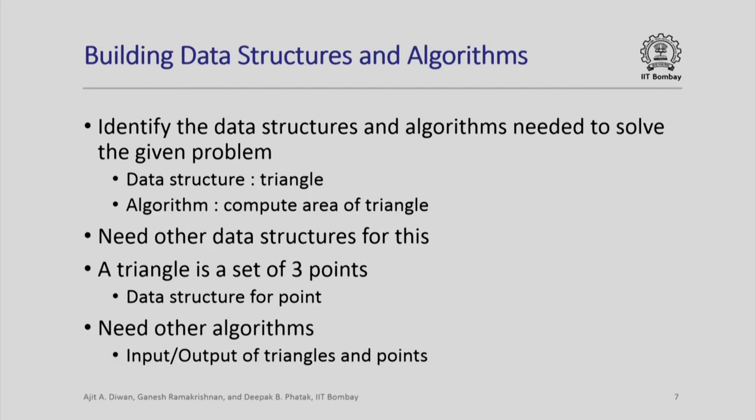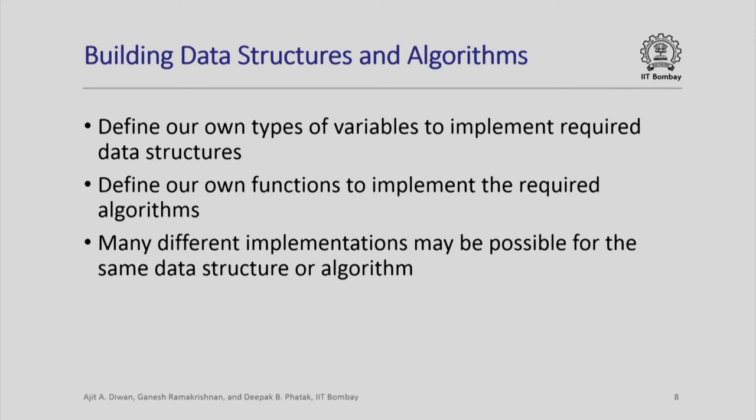In general, in a programming problem you need to identify the data structures and algorithms that are needed to solve the given problem. In this case the data structure needed was a triangle and the algorithm needed was how to compute the area of a triangle. But for this you may need other data structures — there is no direct way of representing a triangle, so a triangle is a set of points and you again need a data structure for points. You may need other algorithms for input/output and so on — for reading in and writing triangles and points. So we need to define our own types of variables to implement required data structures and our own functions to implement the required algorithms.